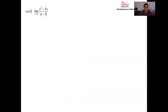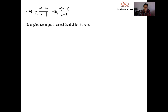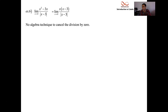One more example: absolute value in the denominator, with x going towards 3. The numerator is x squared minus 3x, which factors, and x minus 3 is a factor of the numerator. So we have division by zero to deal with. Here, though, the numerator is also zero — but we can't cancel them, because there's an absolute value on the bottom and parentheses on top. You can't cancel those and say the function behaves like y equals x.